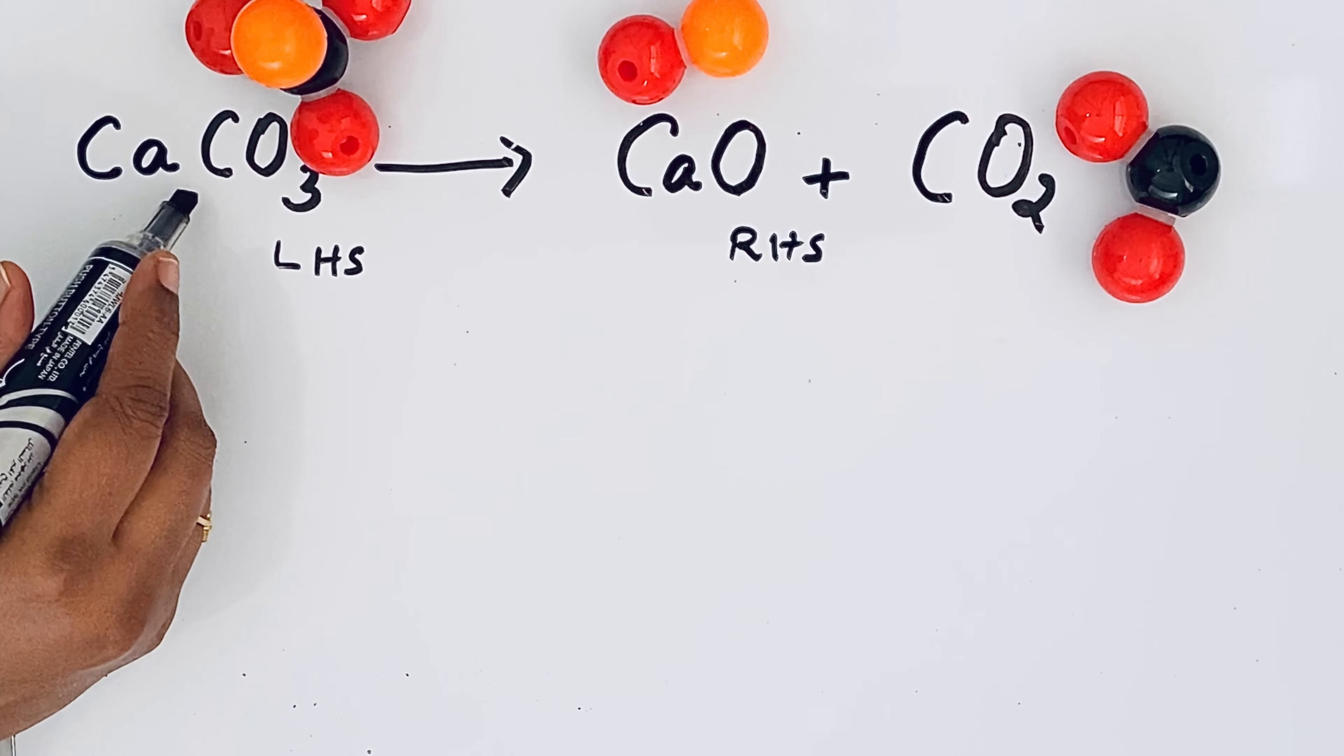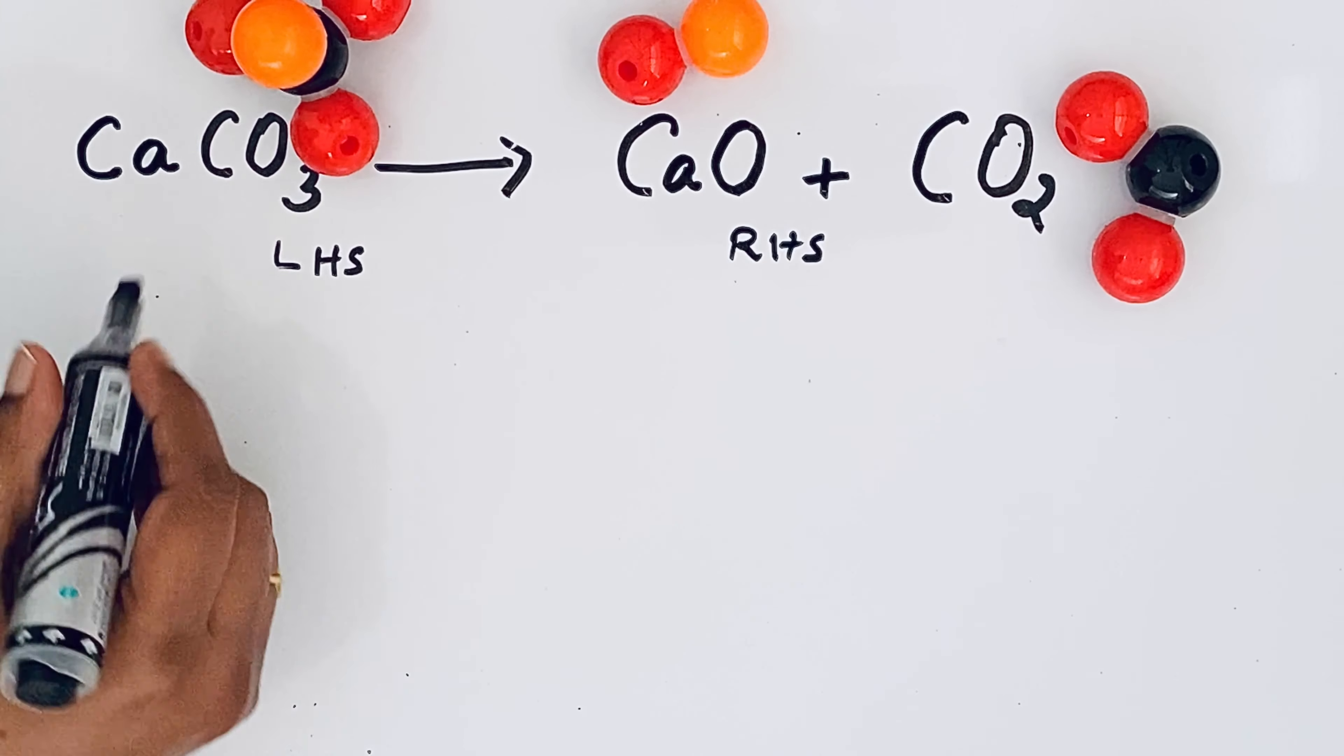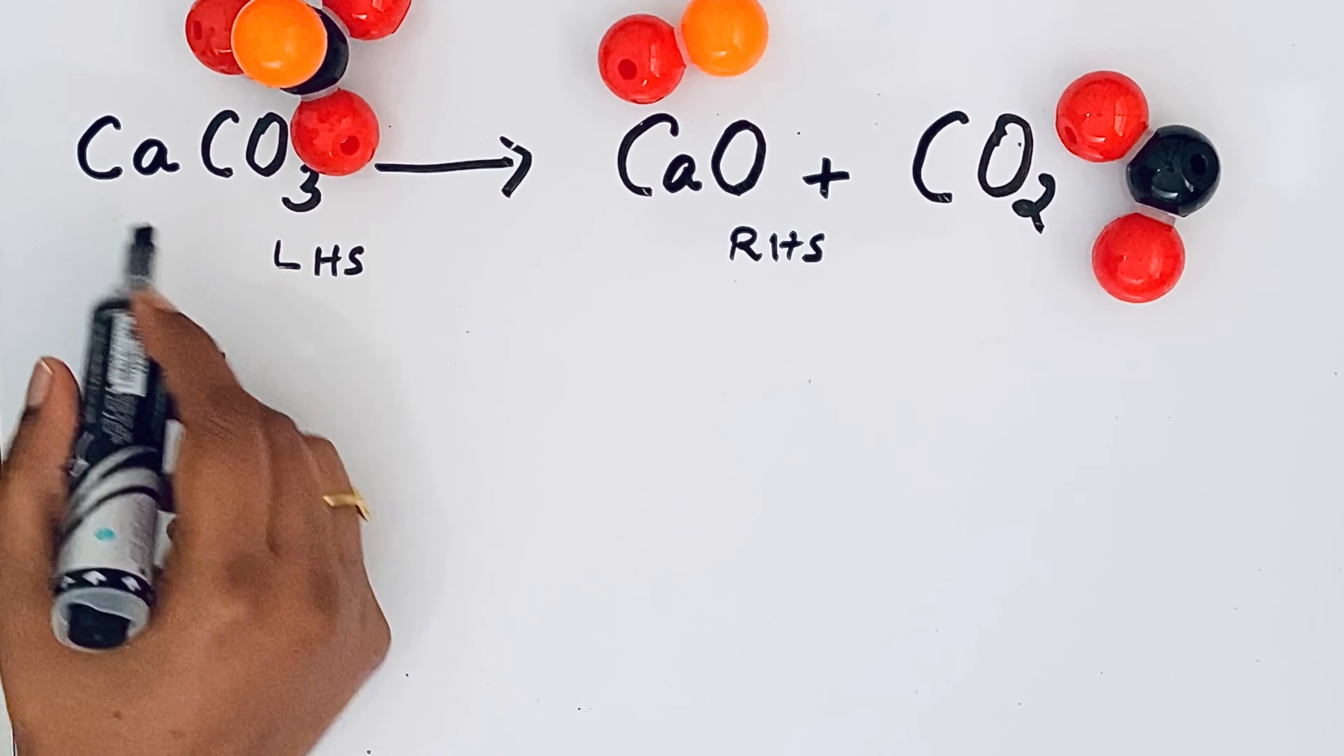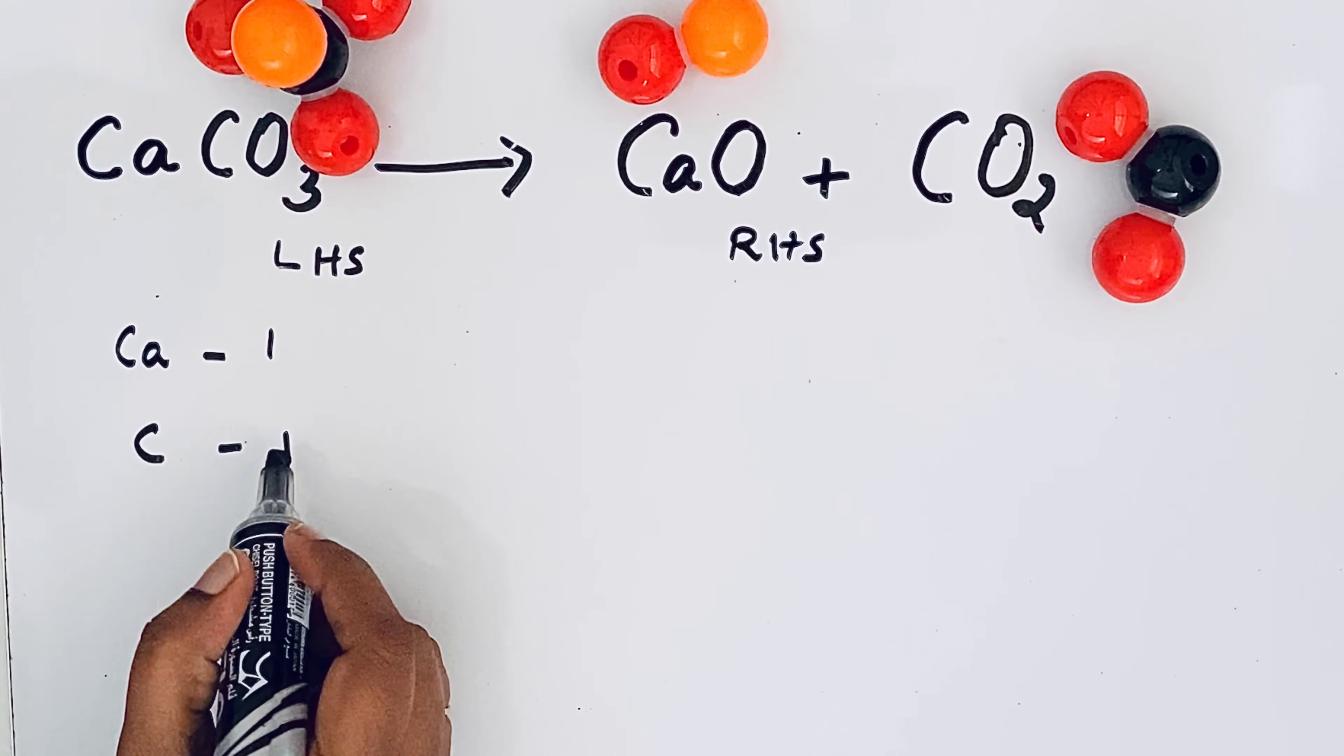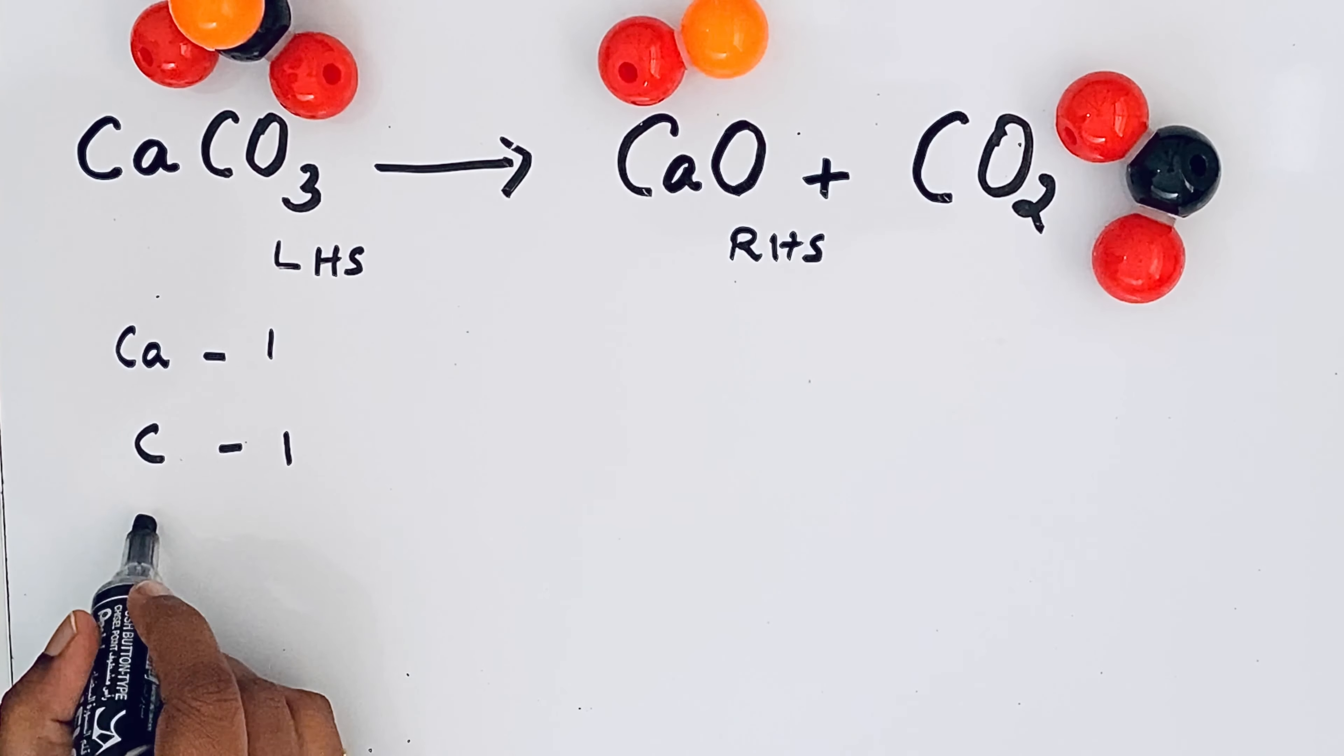In CaCO3 the atoms present in CaCO3 we are going to write one by one. So Ca calcium only one atom is present. Carbon also only one atom. Oxygen you can see there are three oxygen atoms present.